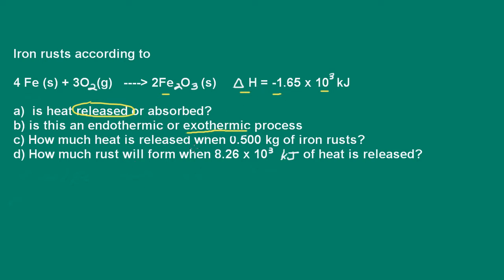So now we're asked, how much heat is released when 0.5 kilograms of iron rusts? Well, let's take a look at the chemical equation. When 4 moles of iron rusts, then we have 1.65 times 10 to the third kilojoules of heat released. If 2 moles of iron were to rust, then we would have half this amount of heat released. So these are the same types of problems we worked before, stoichiometry.